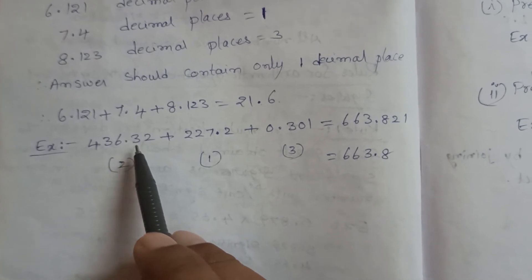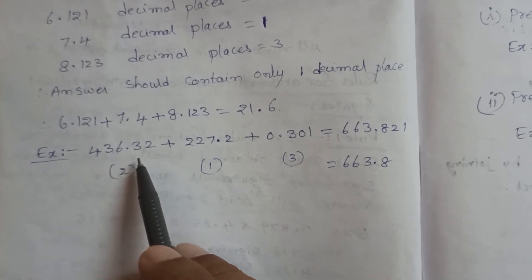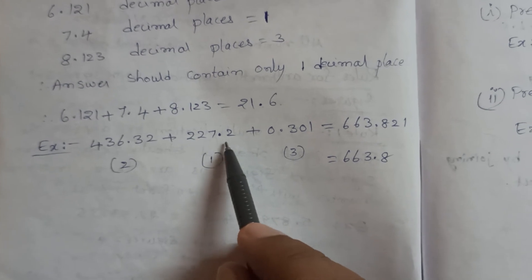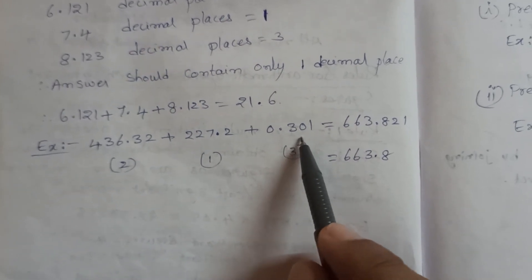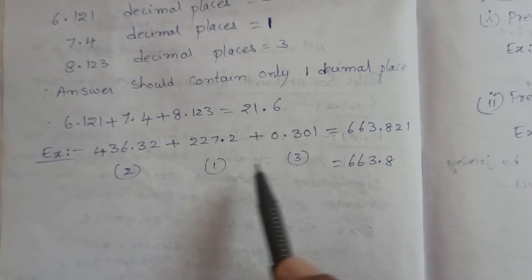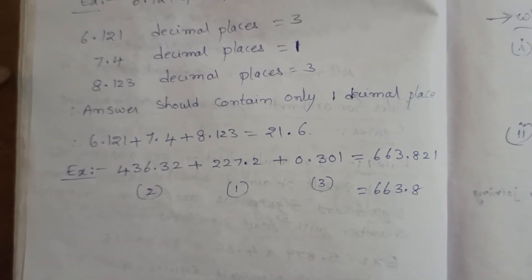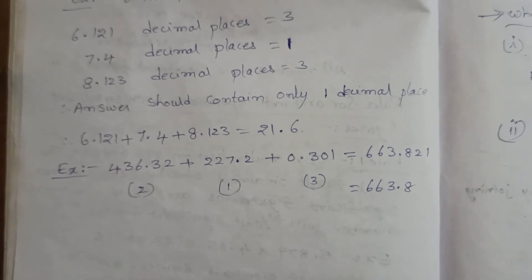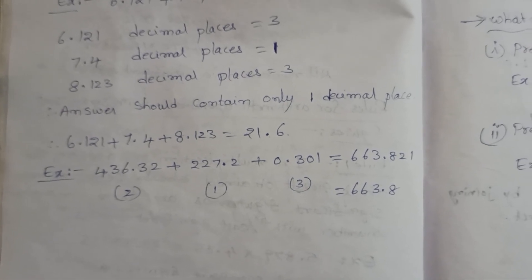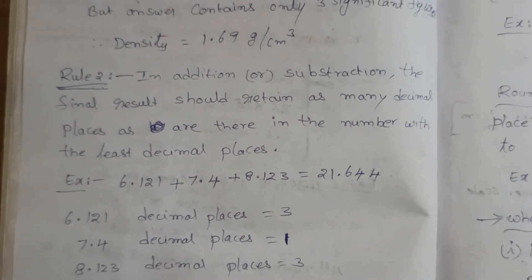For addition and subtraction we consider decimal places, not total significant figures. Here the decimal places are 2, 1, and 3. The least number of decimal places is 1, so the final answer contains only 1 decimal place: 663.8. These are the rules for addition, subtraction, multiplication, and division — one rule for multiplication/division and another rule for addition/subtraction.